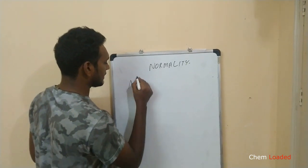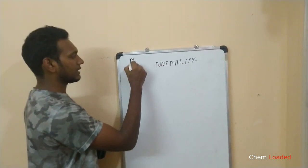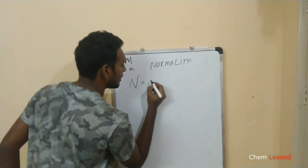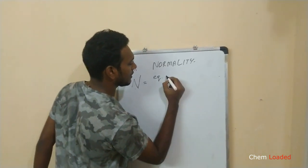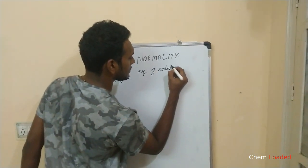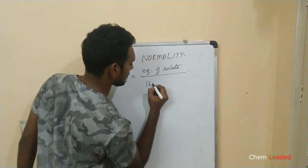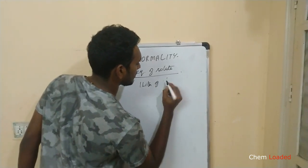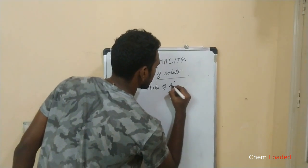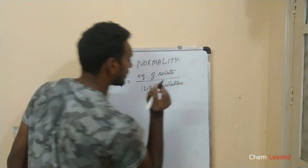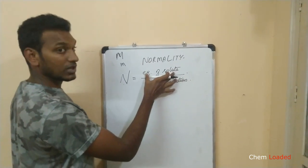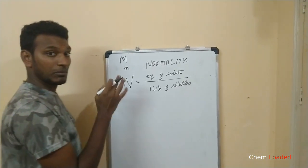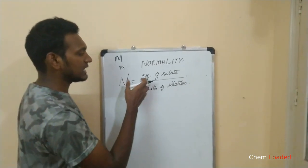Now, normality is denoted by N, and molarity is denoted by capital M. Normality is defined as the number of equivalents of solute divided by 1 liter of solution. If we know the equivalents of solute, we can calculate the normality.